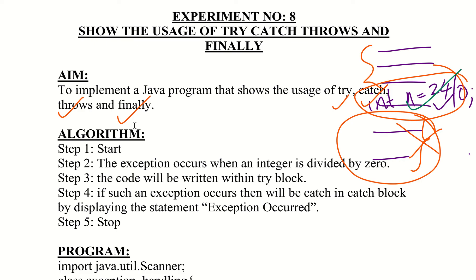The throws keyword is used to declare an exception. It should be followed by the exception class name. The syntax is: throws ExceptionClassName. This is used to declare that a method may throw an exception.